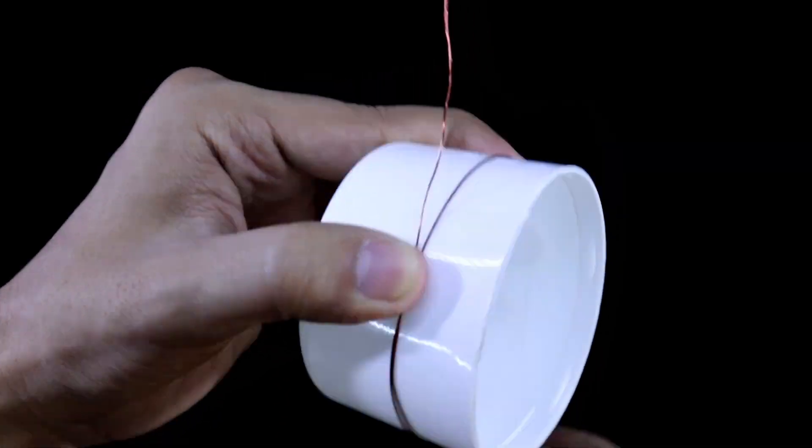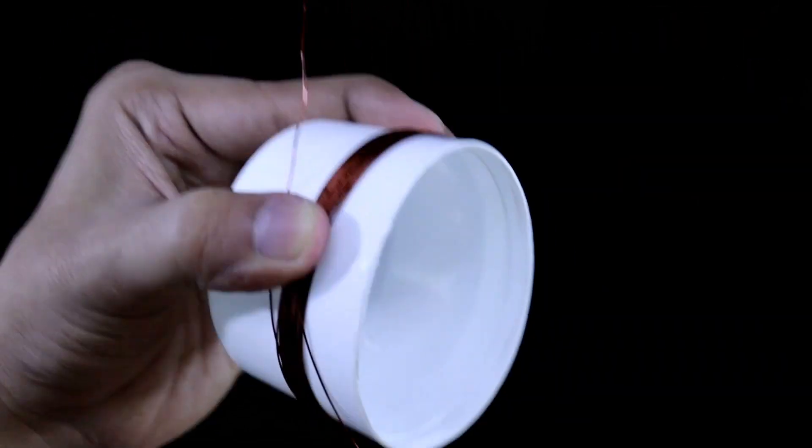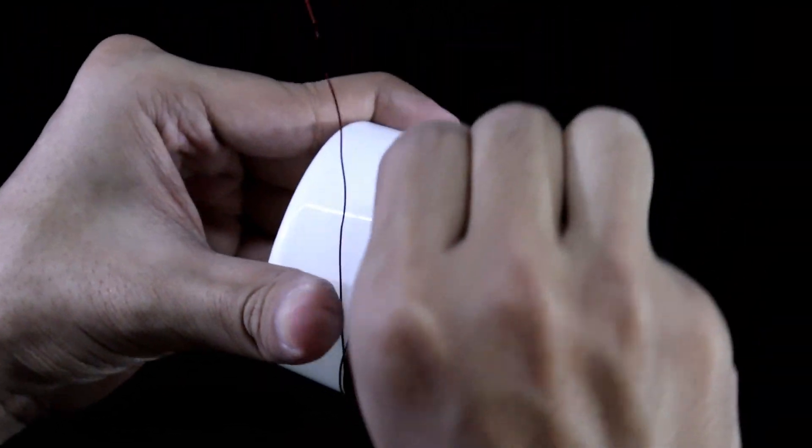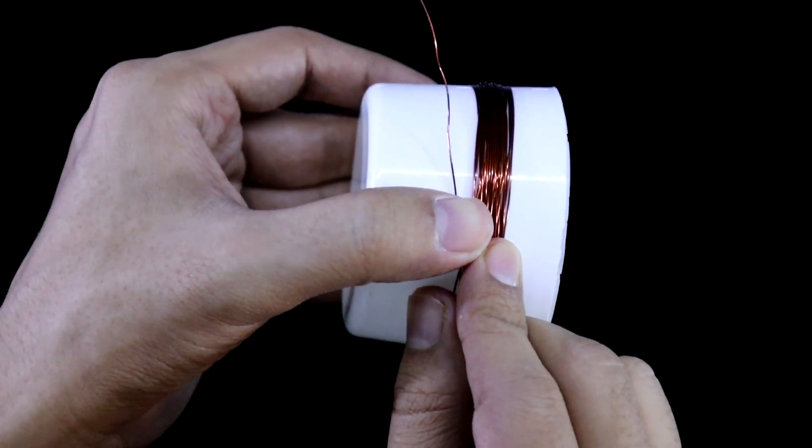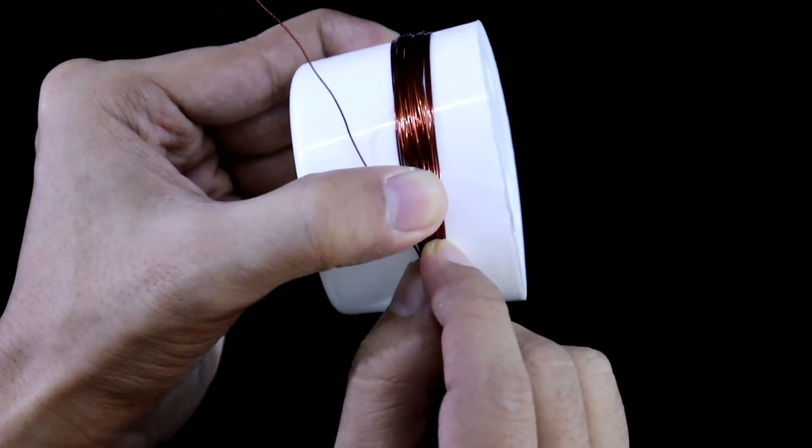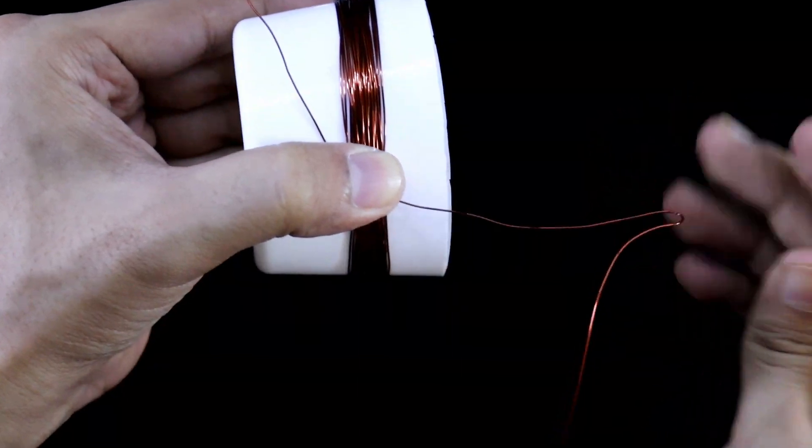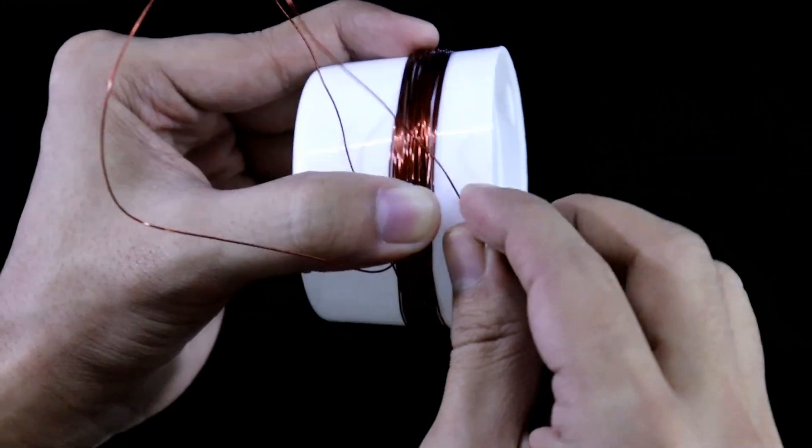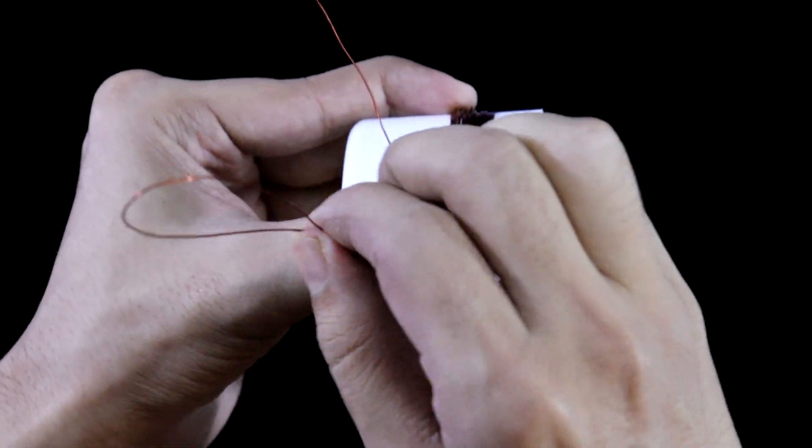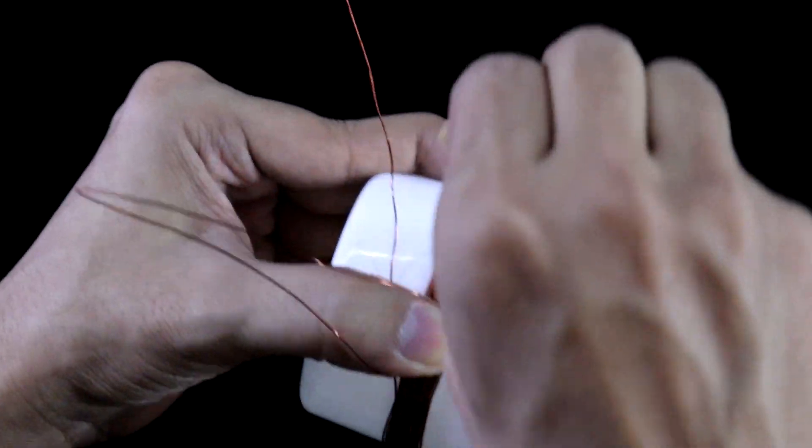Here it is one. 30 turns completed. Now create a center tap. And again 30 turns.